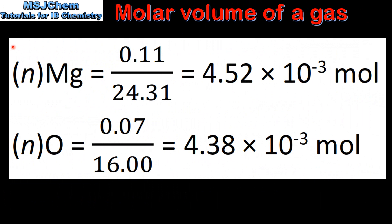The next step is to calculate the amount in moles of magnesium and oxygen. To do this, we divide the mass of magnesium by the molar mass of magnesium, which gives us 4.52 × 10⁻³ moles.